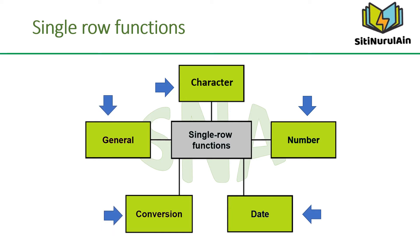Note that these functions are used to manipulate data items. These functions require one or more input arguments and operate on each row, thereby returning one output value for each row. Arguments can be a column, literal, or an expression. Single row functions can be used in SELECT statements, WHERE, and ORDER BY clauses.